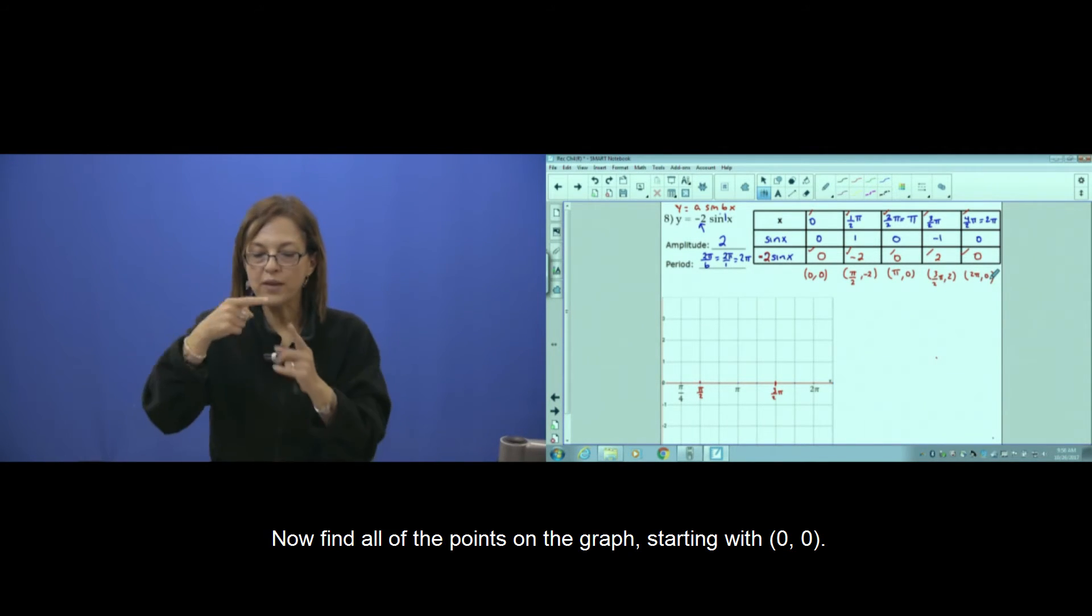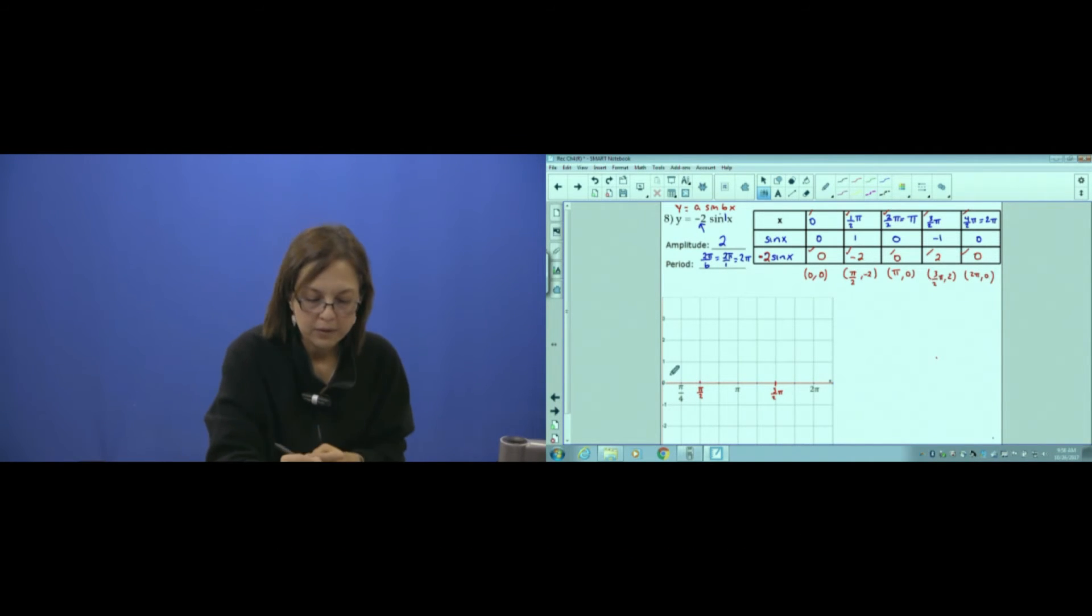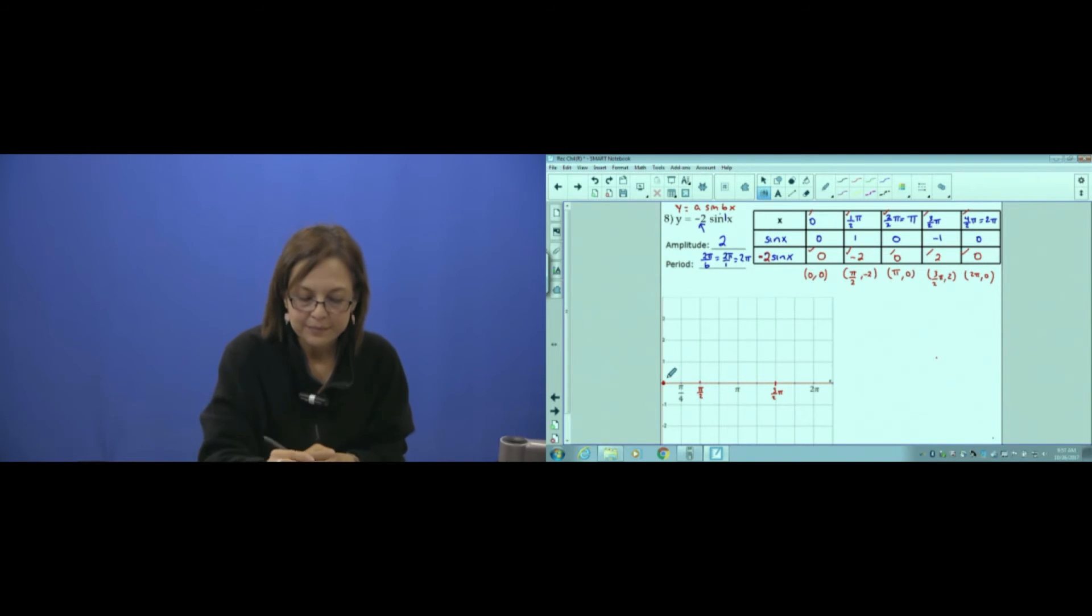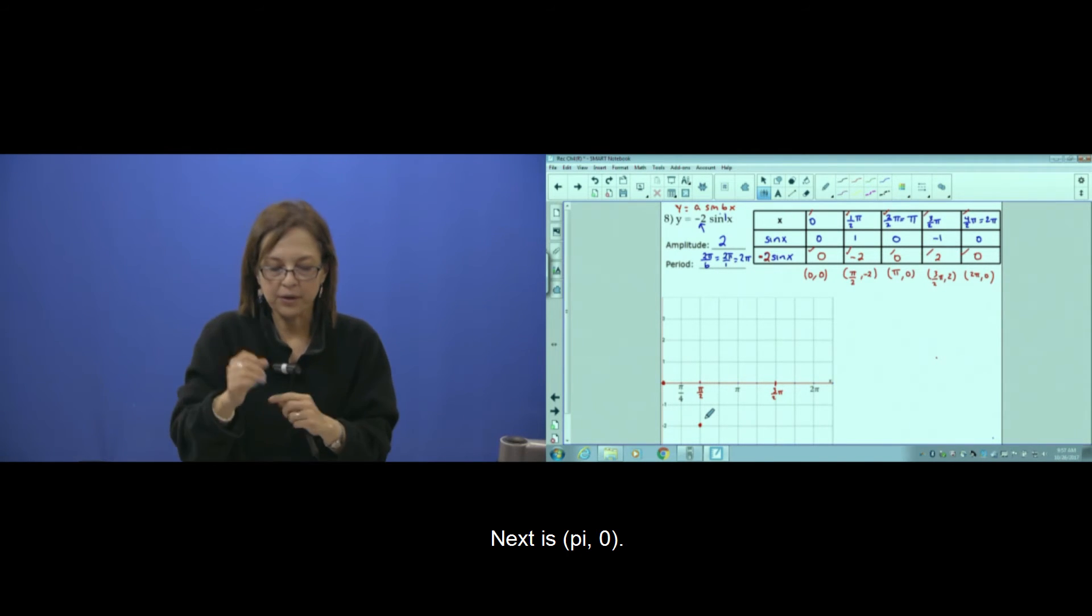Now find all the points on the graph. We'll start with 0, 0. Next, π over 2 comma negative 2. The next, π comma 0.